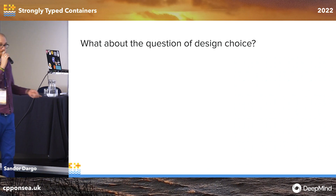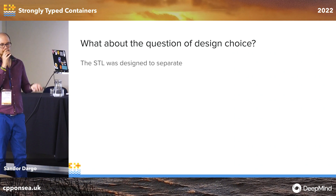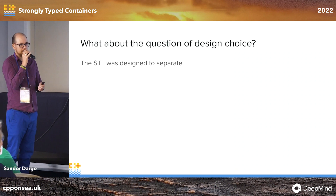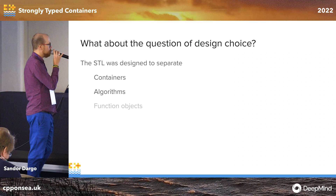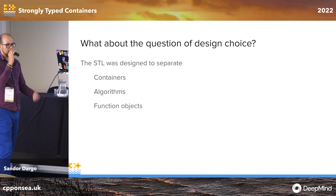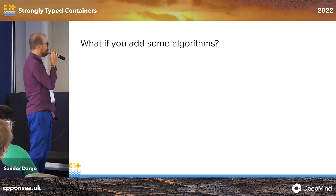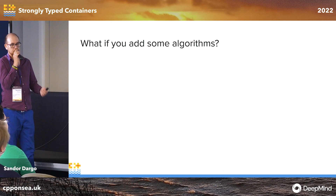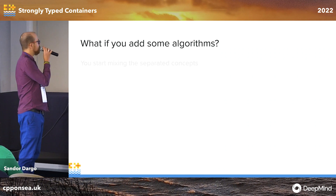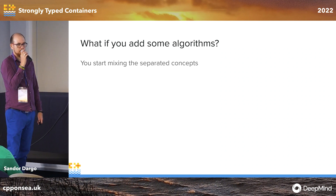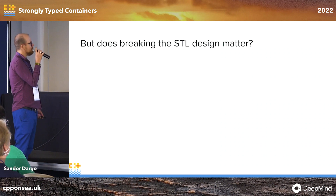There's also another question — not just undefined behavior and the possibility of polymorphic usage. There's also a design choice. If you think about the design of the standard template library, it was designed intentionally so that containers, algorithms, function objects like less and greater, and iterators are completely separated. If you inherit from STL and add algorithms to your strong type, you start mixing those separated concepts.